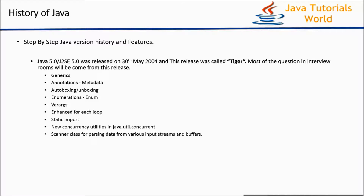The next release of Java is Java 5.0, released on 30th May 2004. This release was called Tiger, and most interview questions come from this release onwards. It includes important features like Generics, Annotations, Auto Boxing and Unboxing, Enumerations, Varargs, For-Each Loop, Static Import, new Concurrency Utilities under the java.util.concurrent package, and the Scanner class was also introduced.